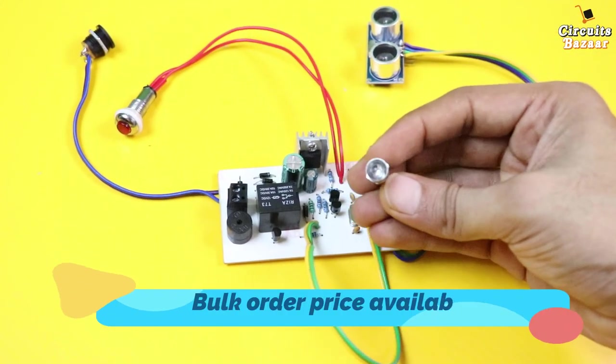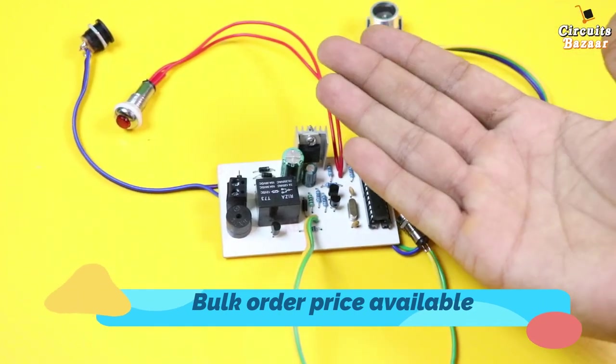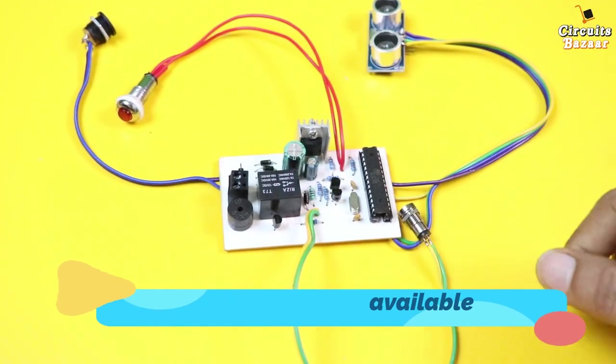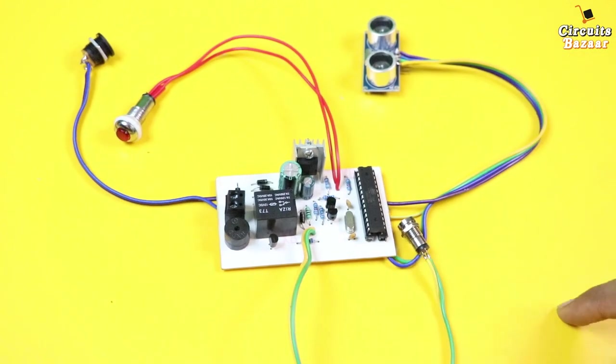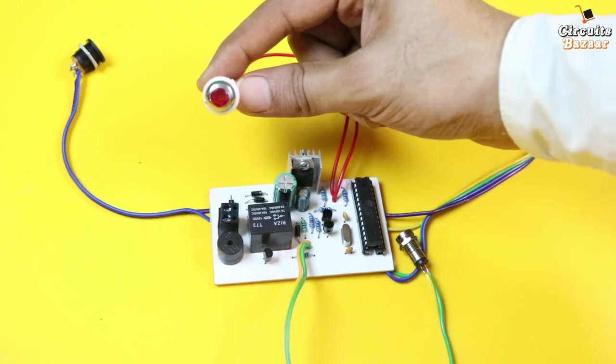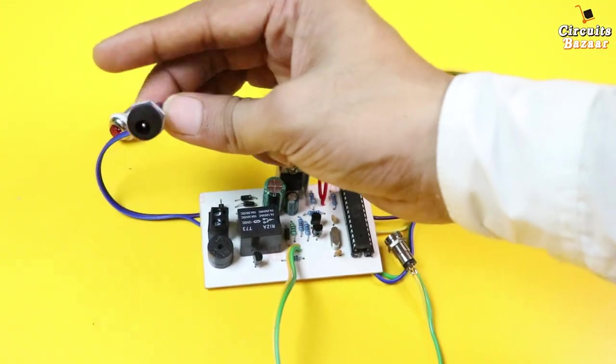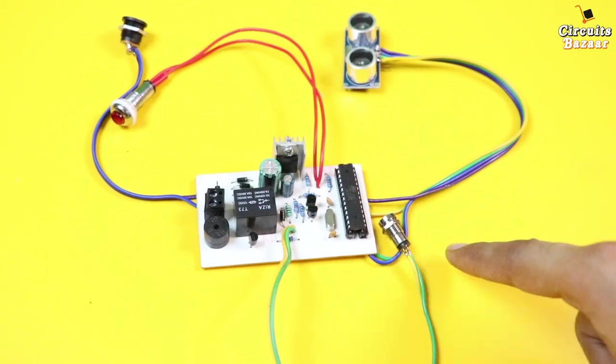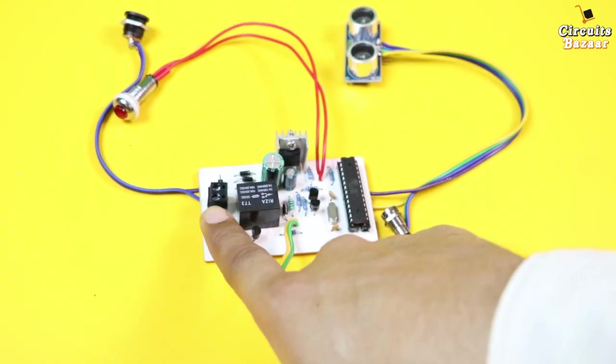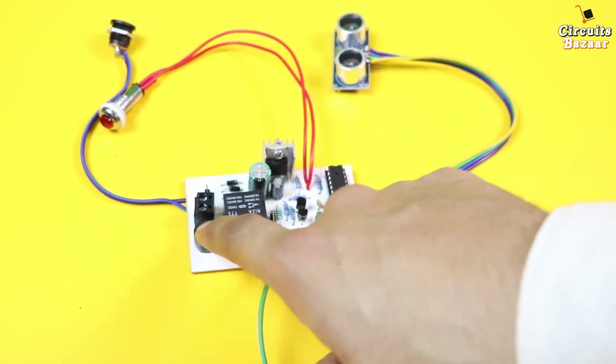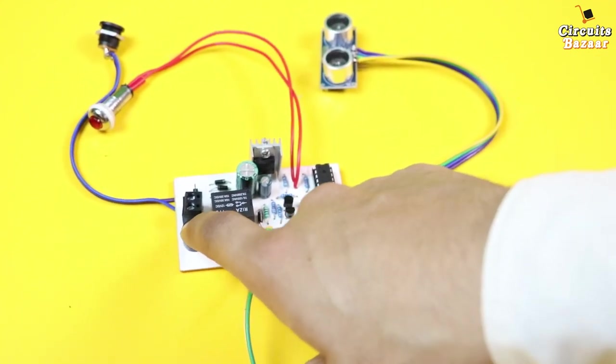This is the blue color LED. This blue color LED will fall on the hand whenever you will offer your hand for the automatic sanitizer operation. This is the power LED indicator, and this is the DC jack. You need to insert 12 volt power supply. So it's working on 12 volt, and this is the DC jack where you can attach your SV solenoid valve or 12 volt motor.